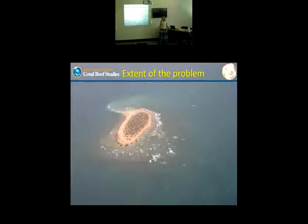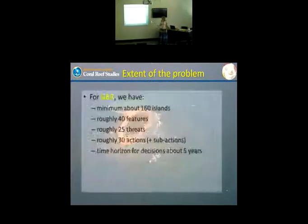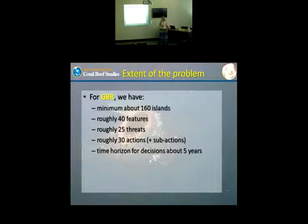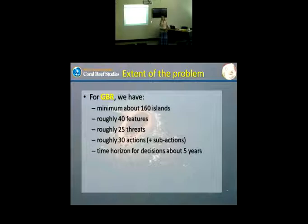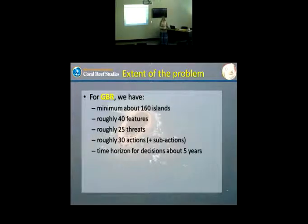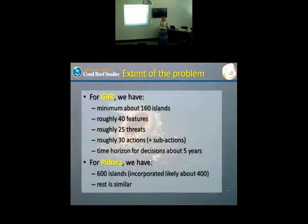What is the extent of the problem? For GVR, we have a minimum of around 160 islands with roughly 40 species and 25 threats, and around 30 action types that will break down into a larger number. The time horizon is three to five years. For the Pilbara region, we have something like 600 islands, but effectively around 400 usable islands, with roughly similar numbers otherwise.